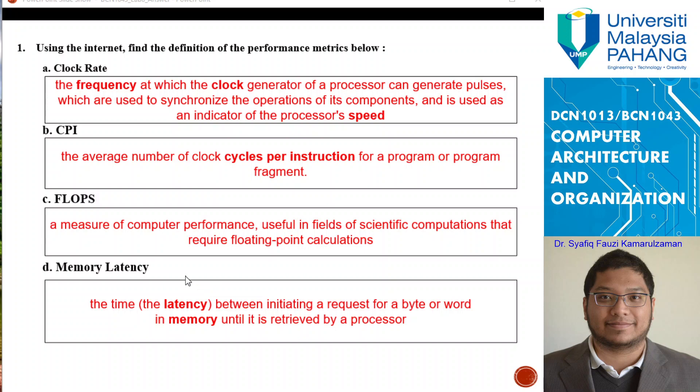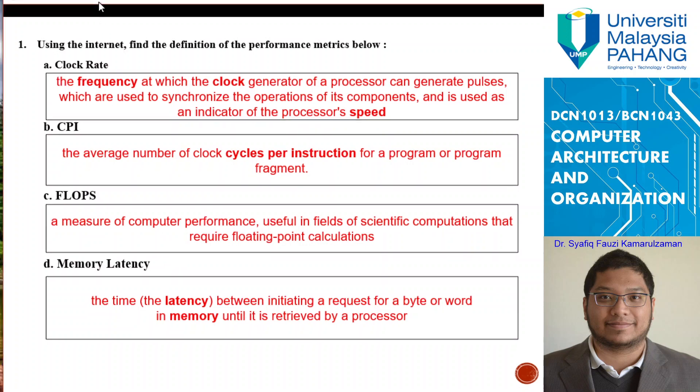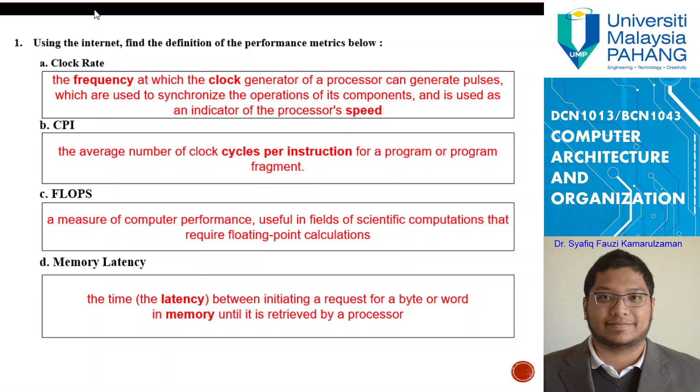First one, using the internet, find the definition of the performance matrix below. So start with clock rate here. What exactly is clock rate? The clock rate is the frequency at which the clock generator of a processor can generate pulses which are used to synchronize the operation of its components, and it is used as an indicator of the processor's speed. This is what you see on clock rate.